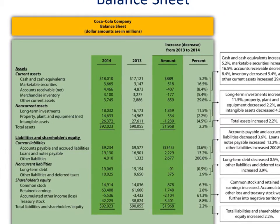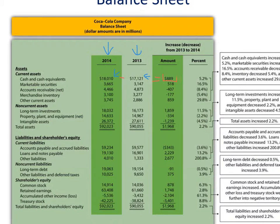Here's an example of trend analysis for Coca-Cola's balance sheet from 2013 to 2014. Looking at the cash and cash equivalents line item as an example: the dollar amount went up from 2013 to 2014 — from $17,121 million up to $18,010 million. If we do the math, we take 18,010 and subtract 17,121, giving us a positive $889 million. So cash and cash equivalents went up by $889 million.